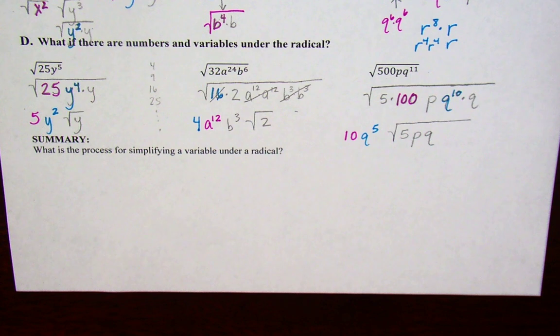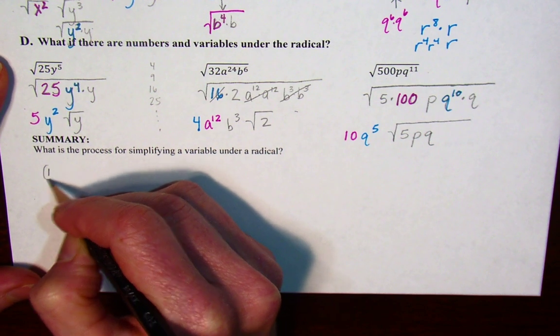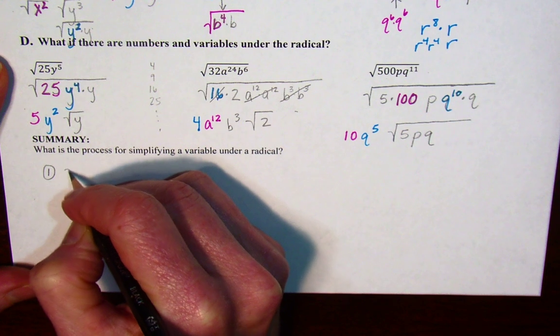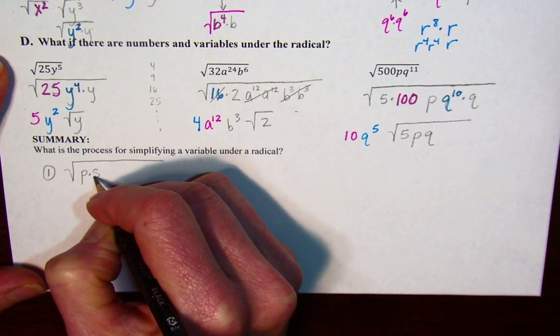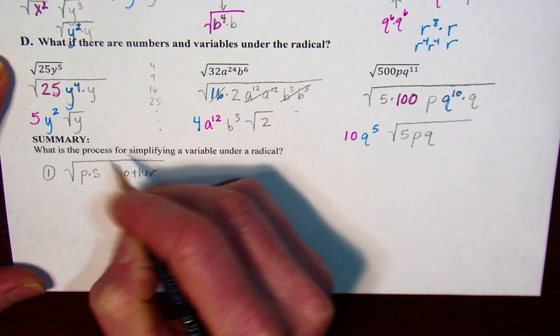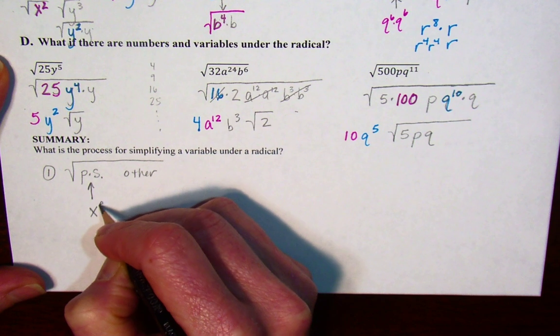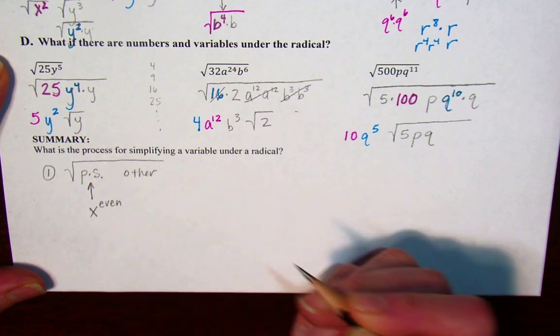How would you summarize the process for simplifying a variable under a radical? What you're doing is you are looking for the perfect square underneath the radical, some kind of perfect square, and then there's going to be some other expression there. If it's a variable, you want something to an even numbered exponent.